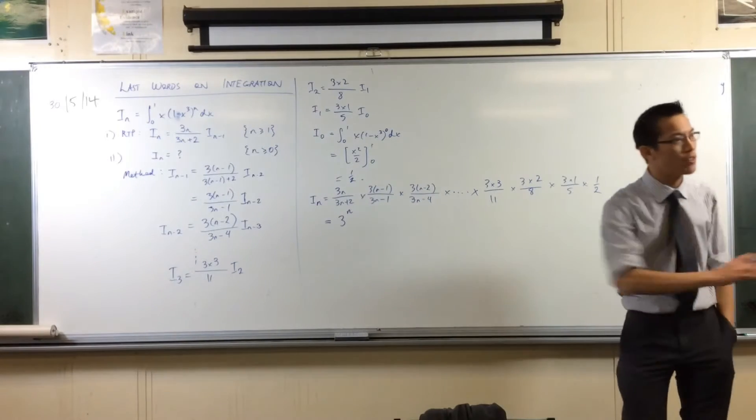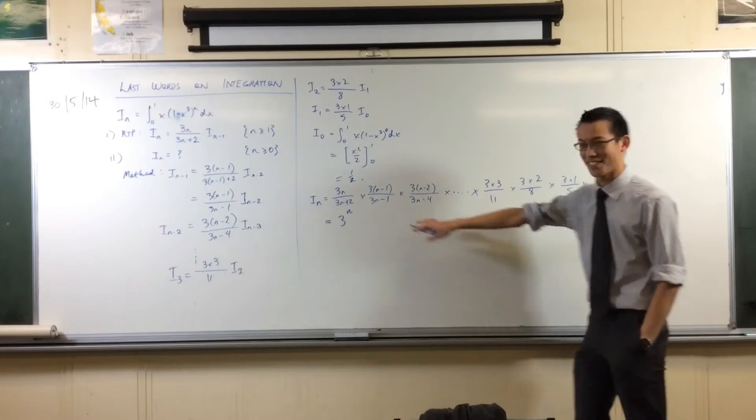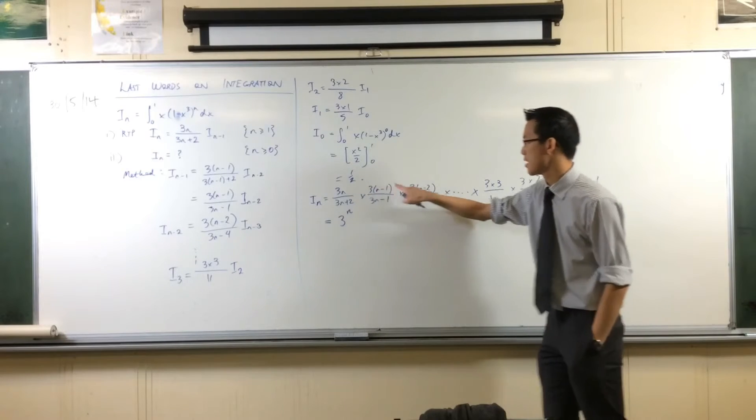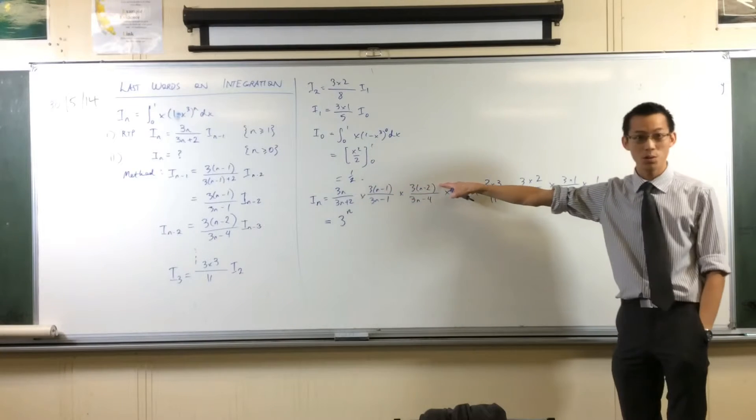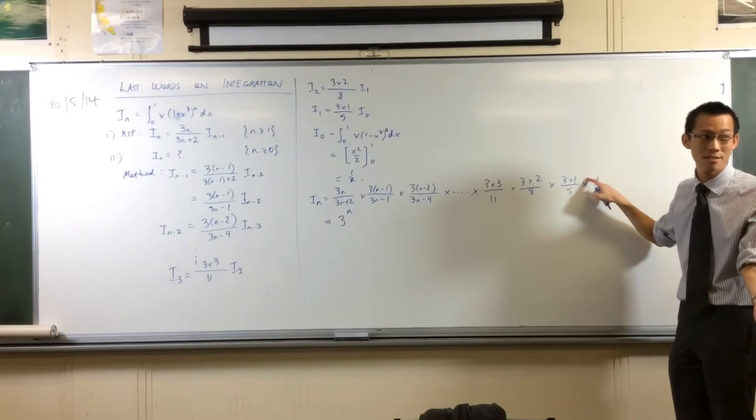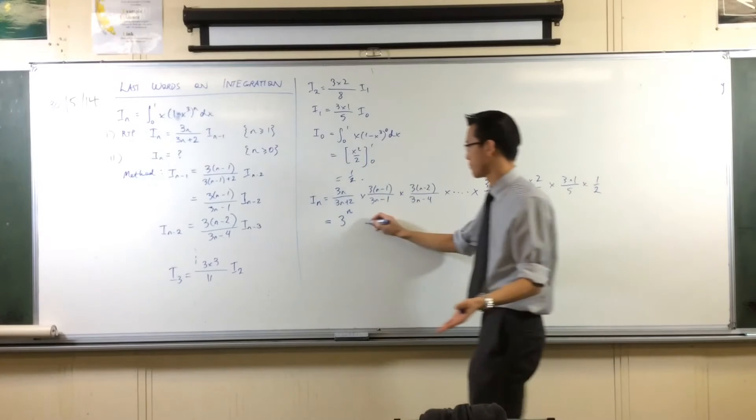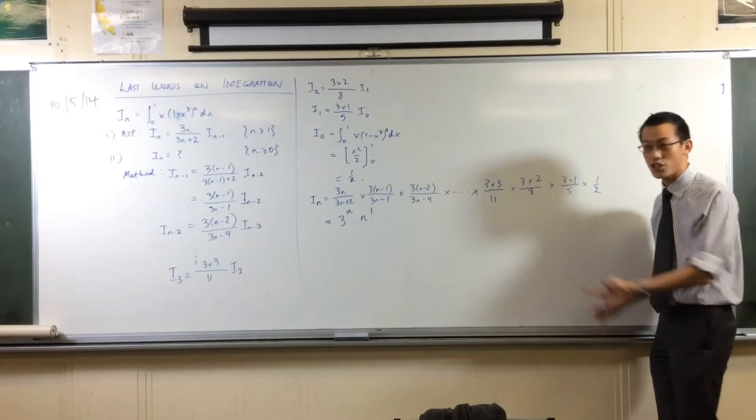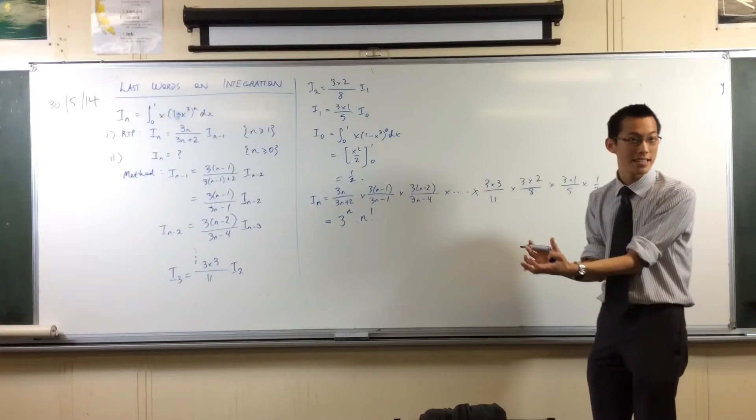Once you factor out all of the 3s, there are a lot of them. What do you end up with on the top? You've got n times n minus 1 times n minus 2 times whatever the next will be times 3 times 2 times 1. We have a name for this. It's n factorial. That's kind of nice. Your whole numerator collapses down into that.